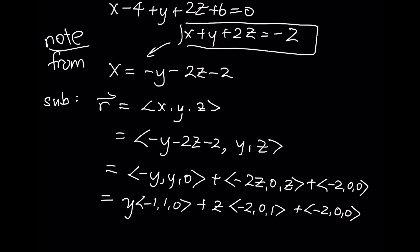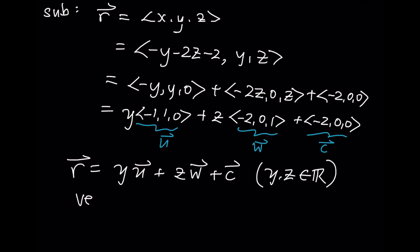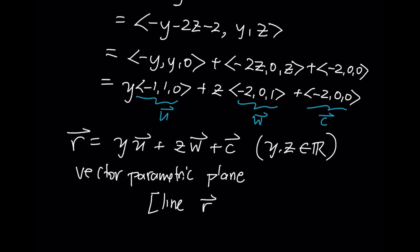So what's ended up happening here? I now have some vector U and some vector W. This is some constant vector. The equation of the plane is Y times U, Z times W plus some constant. And I don't know anything about the Y and the Z other than they are free. So this is the vector parametric form of the equation of a plane. It's reminiscent of the vector parametric equation of a line: R₀ + tv. That was our parameter. So a line is a special linear object with one parameter, whereas a plane is a special linear object with two parameters.